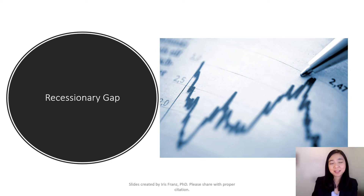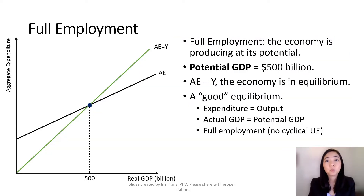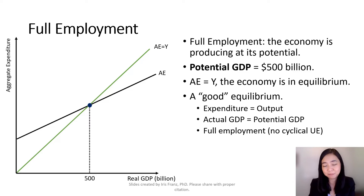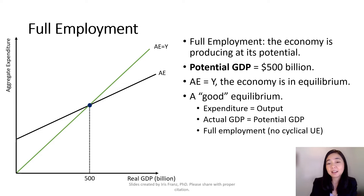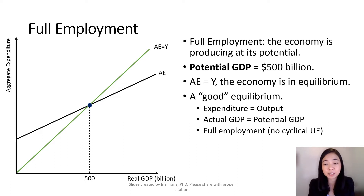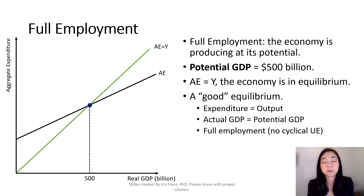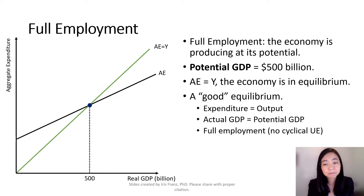Hello, everyone. Professor Franz here. Today we're going to talk about recessionary gap. We start with our economy operating at its potential GDP. Suppose the potential GDP is $500 billion, and our aggregate expenditure is equal to our output, meaning our economy is in equilibrium. This is a good equilibrium because our actual GDP is equal to potential GDP, meaning we have full employment and there is no cyclical unemployment.